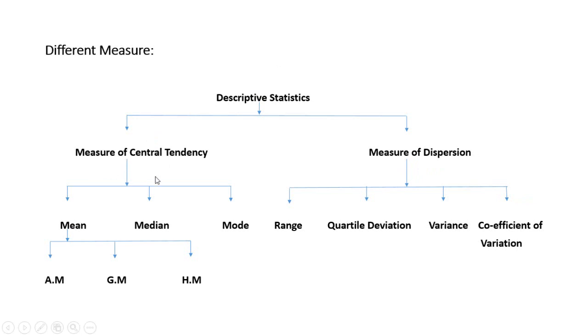Measure of central tendency can be classified in three parts: mean, median, and mode. Again, mean can be of three types: arithmetic mean, geometric mean, and harmonic mean.